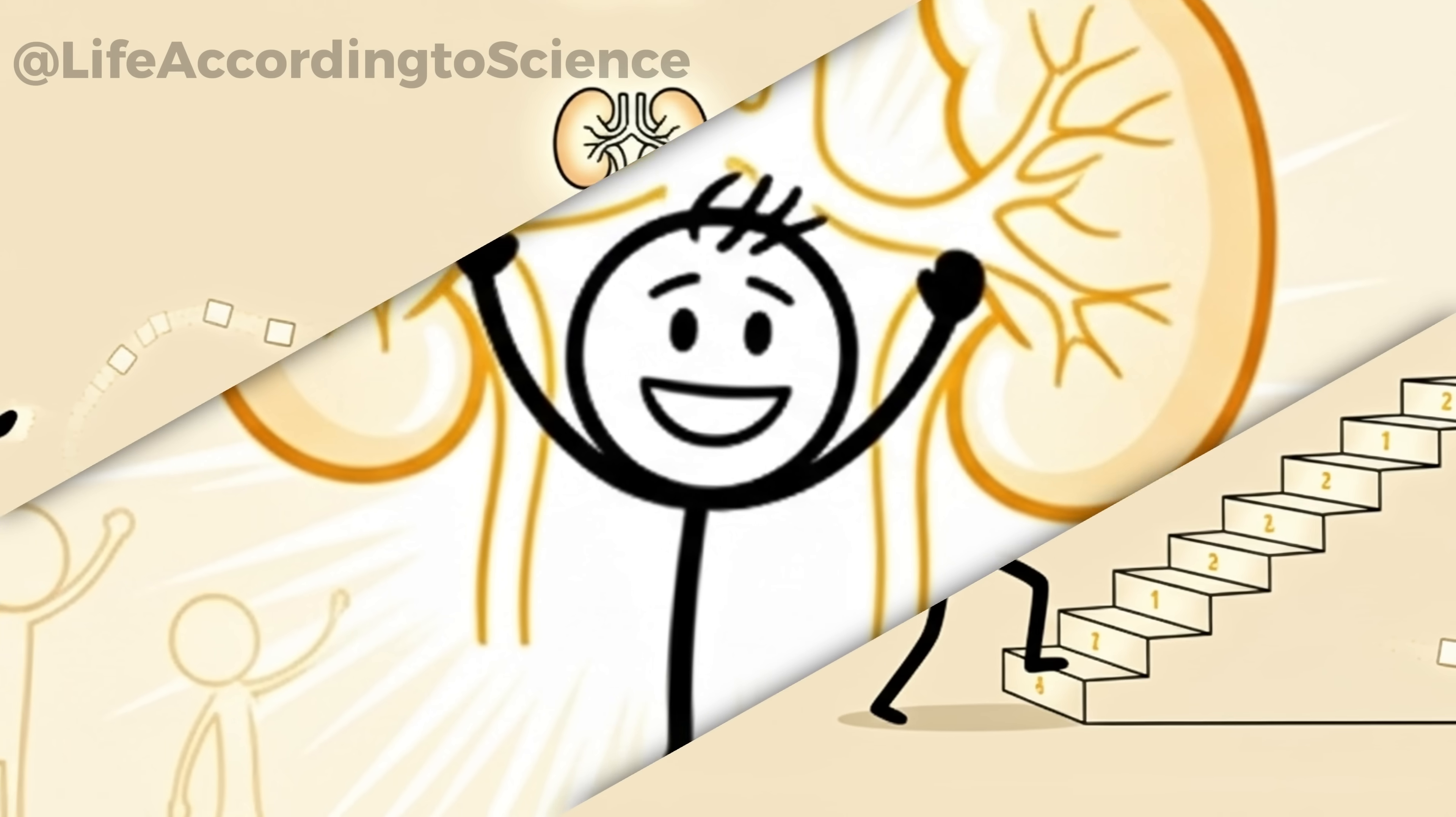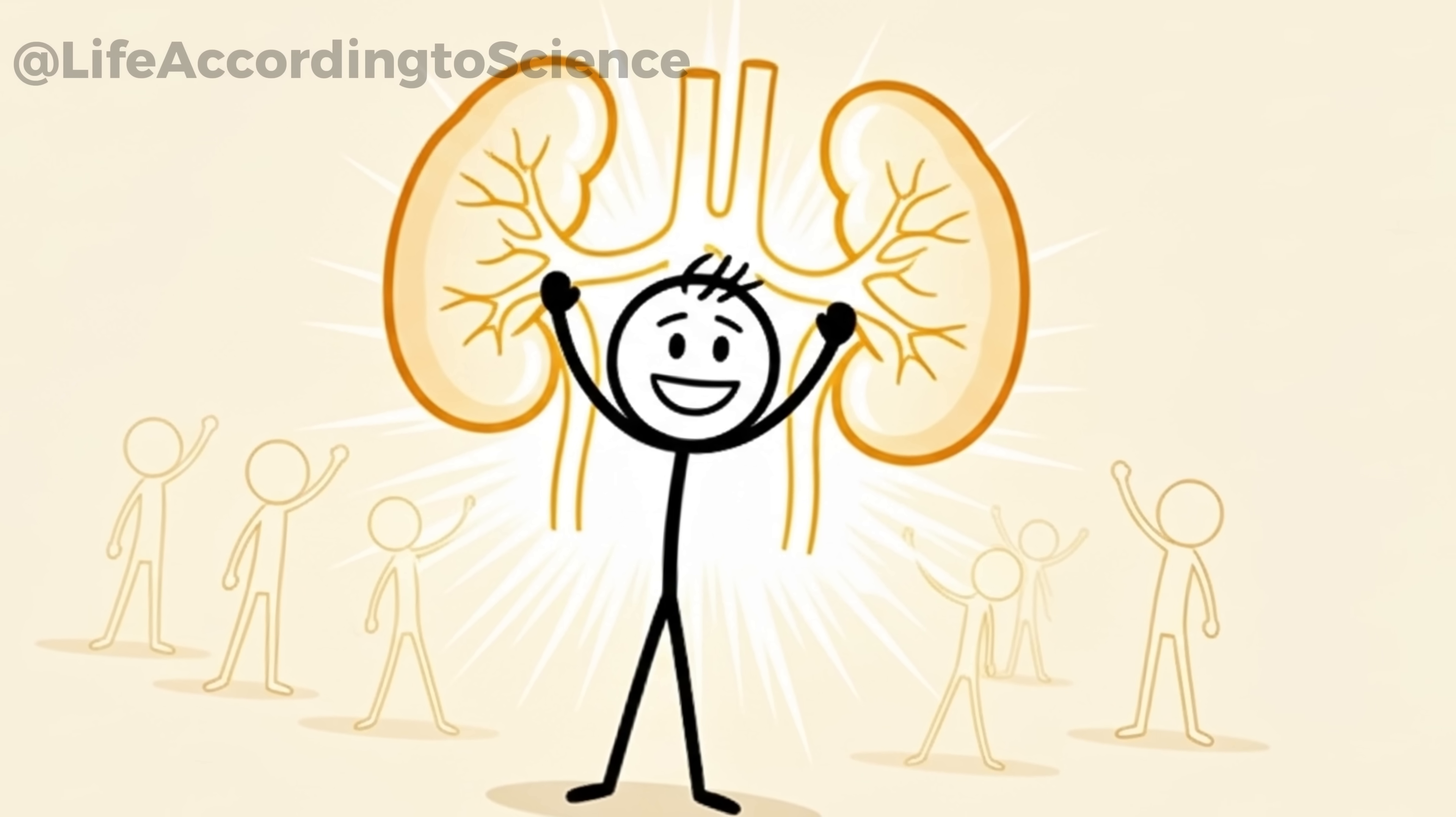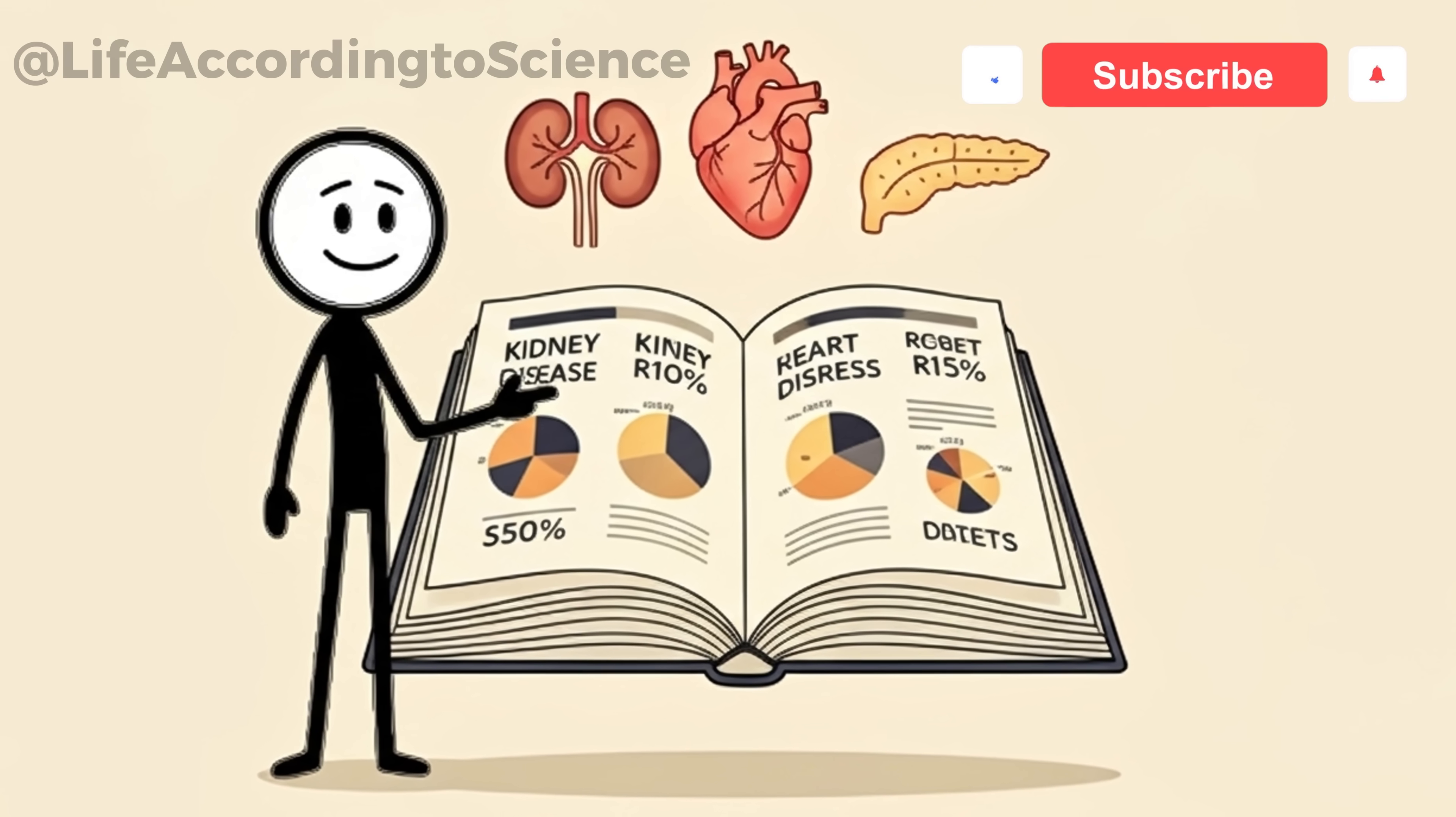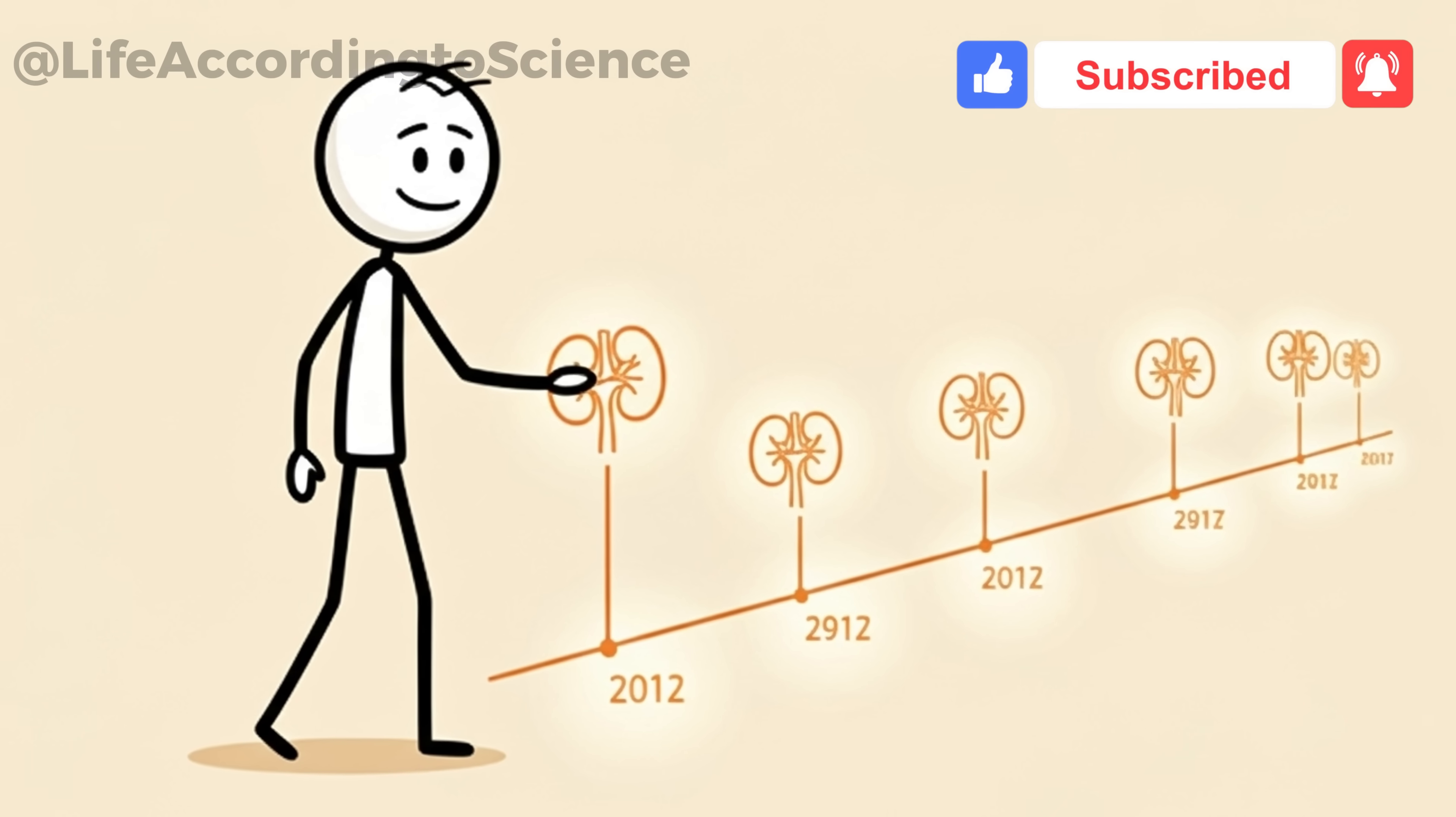Here's the final twist. Most people who cut sugar for 30 days notice benefits so profound that they choose not to go back. Science supports this decision. Long-term studies show that individuals who maintain low-sugar diets have significantly lower risks of kidney disease, heart disease, and diabetes.